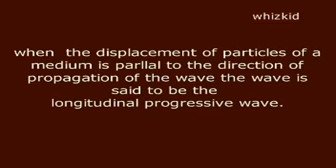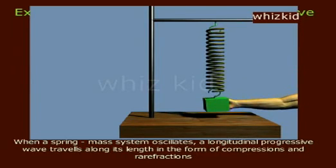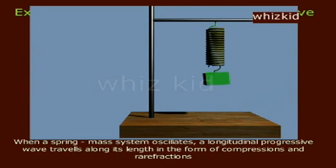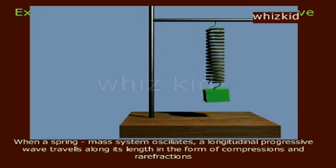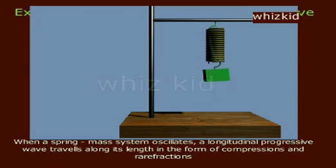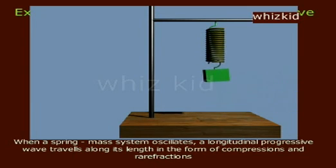Longitudinal waves. When the displacement of particles of a medium is parallel to the direction of propagation of the wave, the wave is said to be a longitudinal progressive wave. Example: when a spring-mass system oscillates, a longitudinal progressive wave travels along its length in the form of compressions and rarefactions.